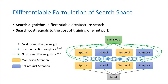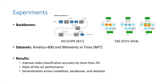The search cost only equals to the cost of training one network. Our cells can be inserted into existing backbones and improve the video classification accuracy by more than 2%. Our cells also achieve state-of-the-art performance and demonstrate strong generalization across different modalities, backbones, and datasets. Welcome to check our paper for more details.